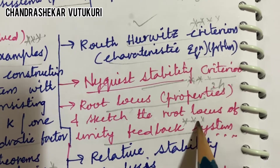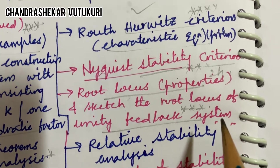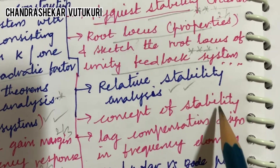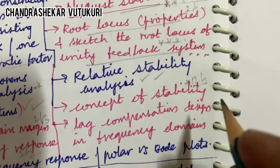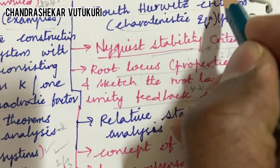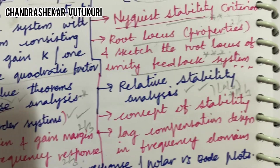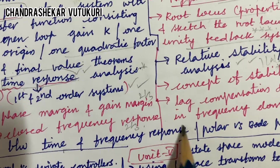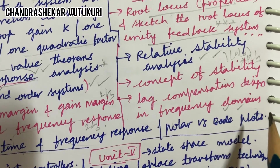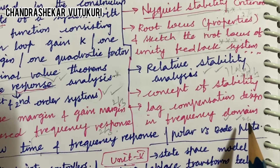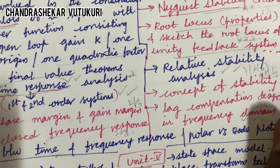Root locus properties may be a 2-mark or 3-mark question. Sketching the root locus of a unity feedback system is said to be a key question this time — do not expect a direct 10-mark question; it is a combination of a and b. Relative stability analysis and the concept of stability may be a 2-mark or 3-mark question. Lag compensation design in the frequency domain is also a topmost question from this part — you may be getting 6ab as well as 7ab. Relation between time and frequency response is also part of this unit, and polar versus Bode plots is also a definite question for 2 or 3 marks.